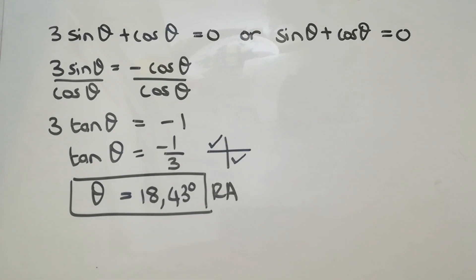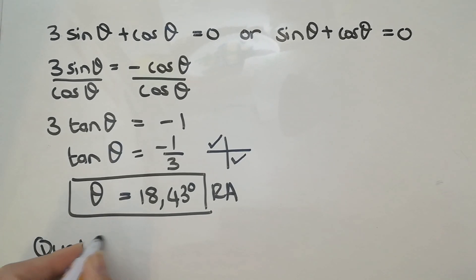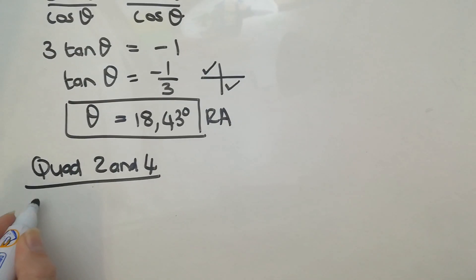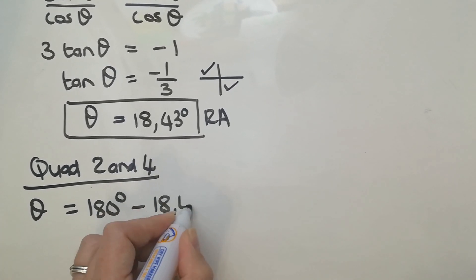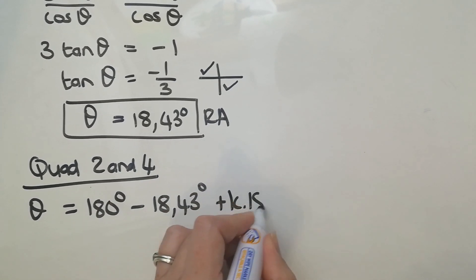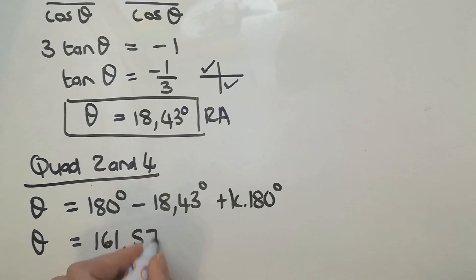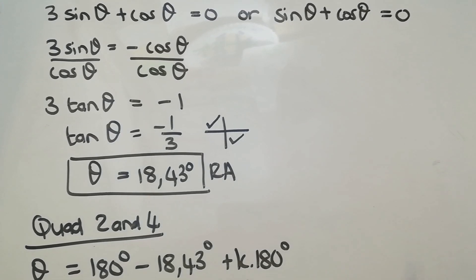When you have a tan you don't need to treat quad 2 and quad 4 separately because the period of tan is 180°, so one formula covers both. In quad 2 and 4 together: θ = 180° − 18.43° + k·180°, which gives θ = 161.57° + k·180°, where k is an element of integers.